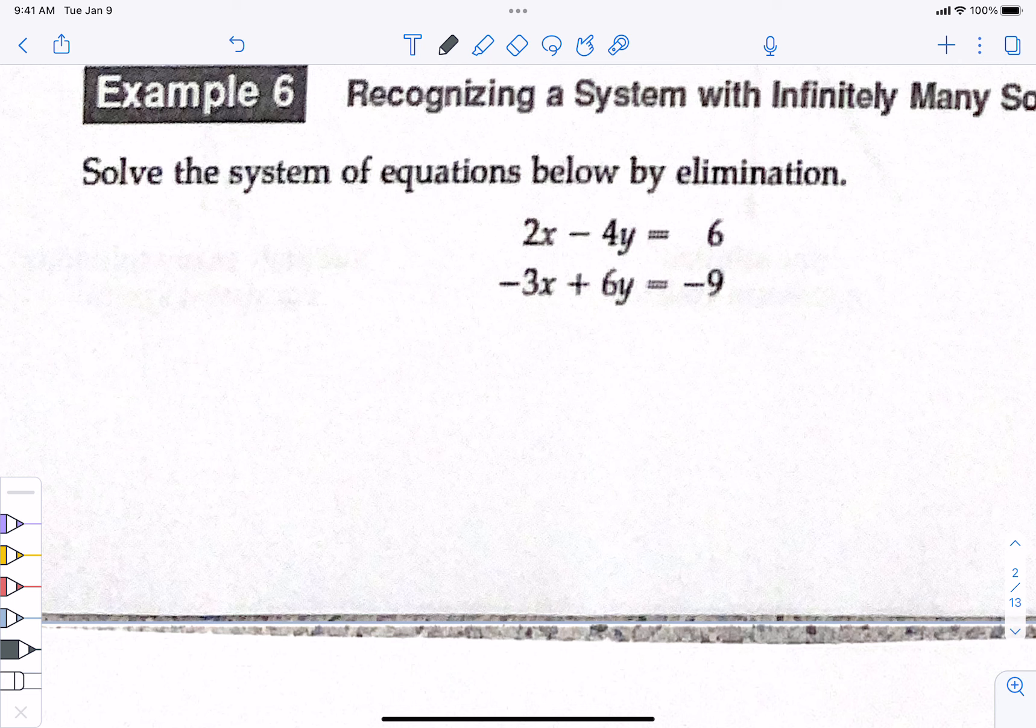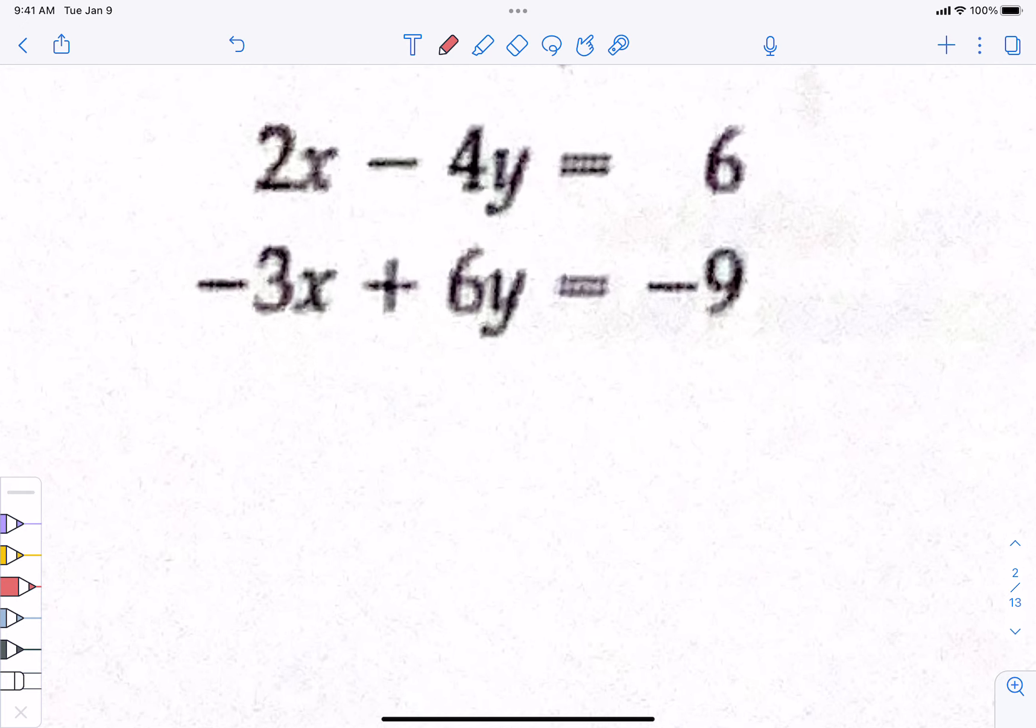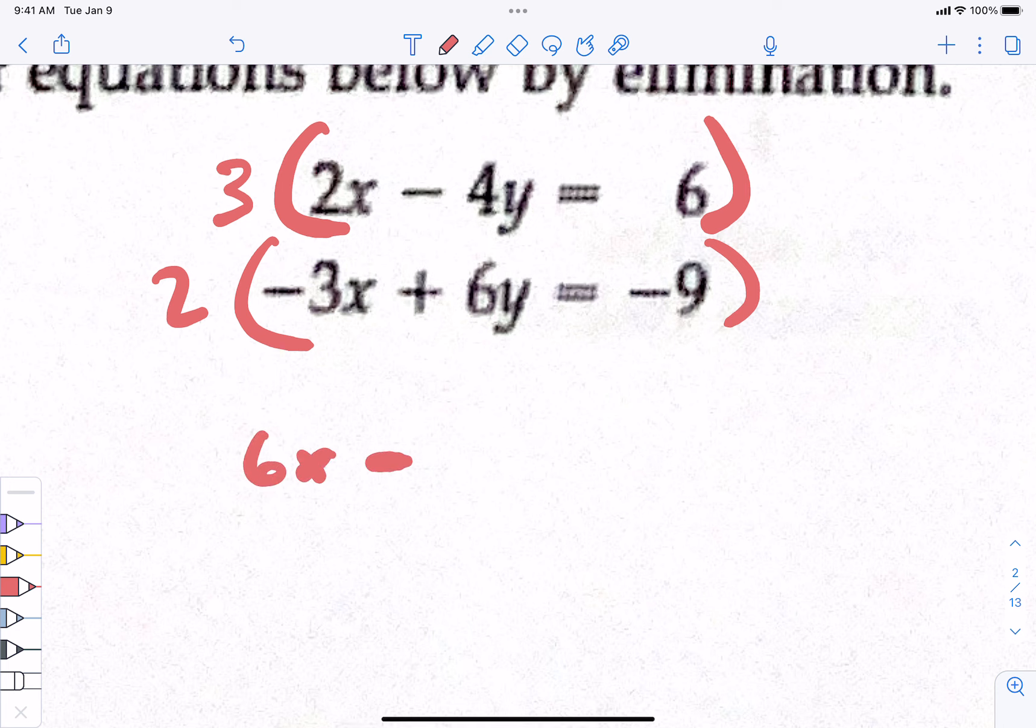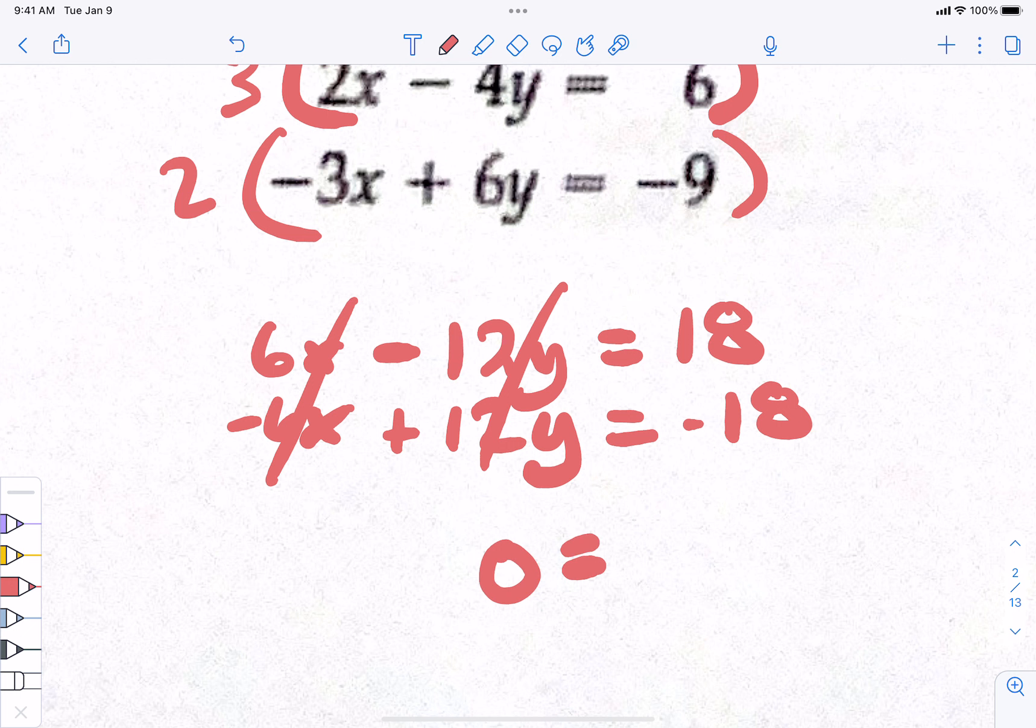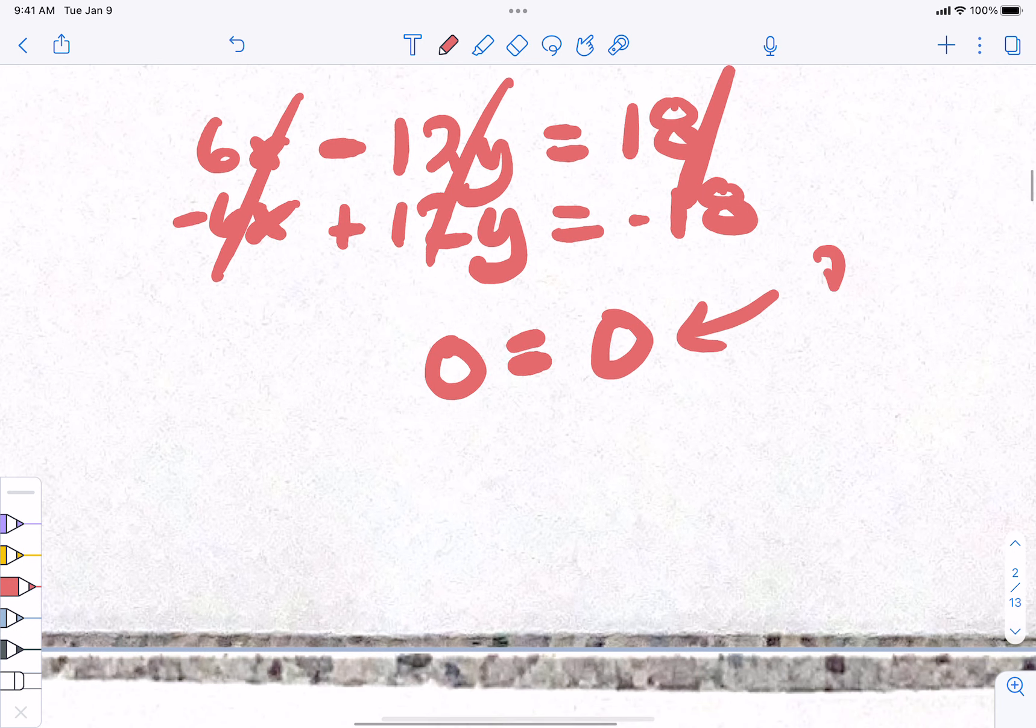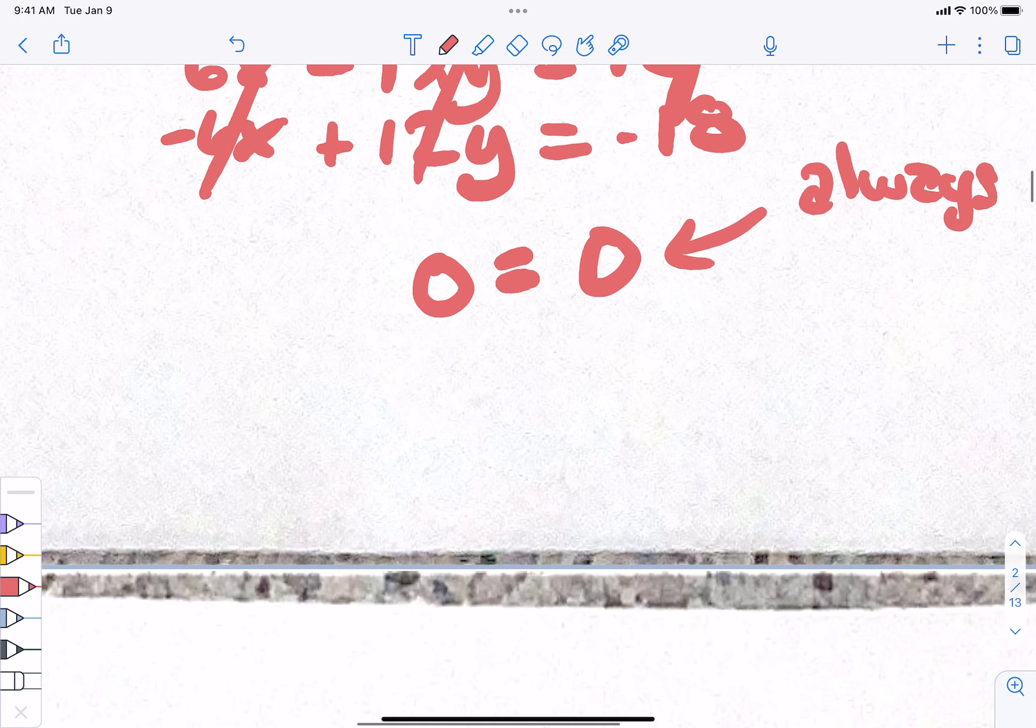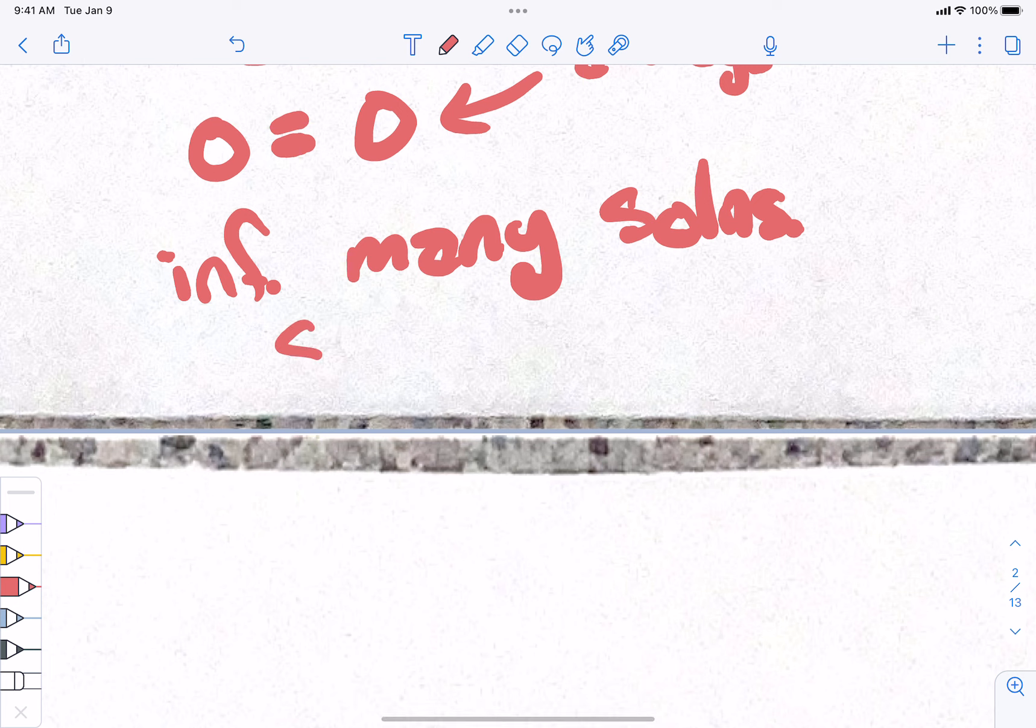Next one. Solve the system of equations below by elimination. Here we go. These two. What would you like to do? Top one times three. Bottom times two. Top times three, go. 6x plus 12y minus 12y equals 18. Okay, bottom. Negative 6x plus 12y negative 18. Okay, so over here we got cross, cross. So, we have 0 equals 0. When is 0 equals 0? Always. Always is 0 equal to 0, which means that I can plug anything I want to in for x and y, and as long as they do it to both equations, I'm going to end up with the same answer. So, infinitely many solutions. And these are the same line. They're just multiplied by something, right? They're the same line.